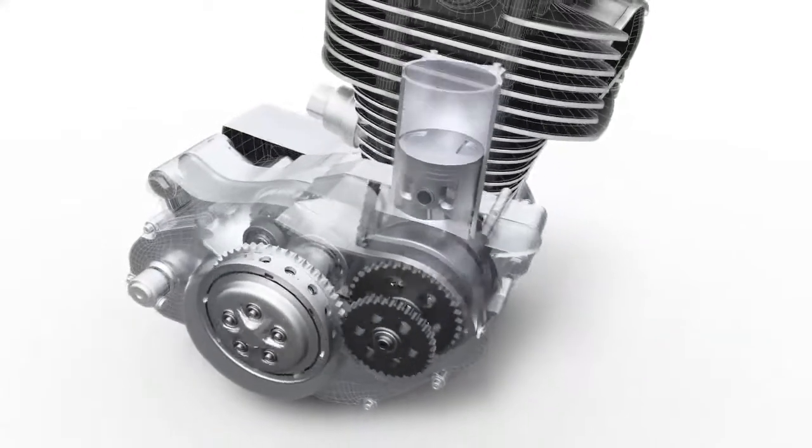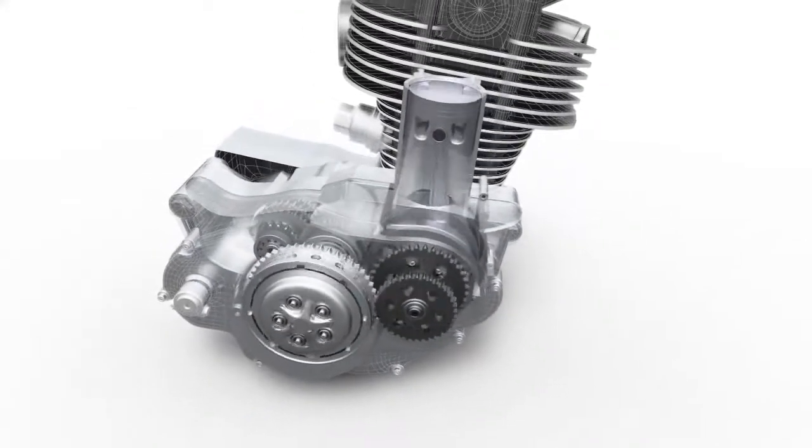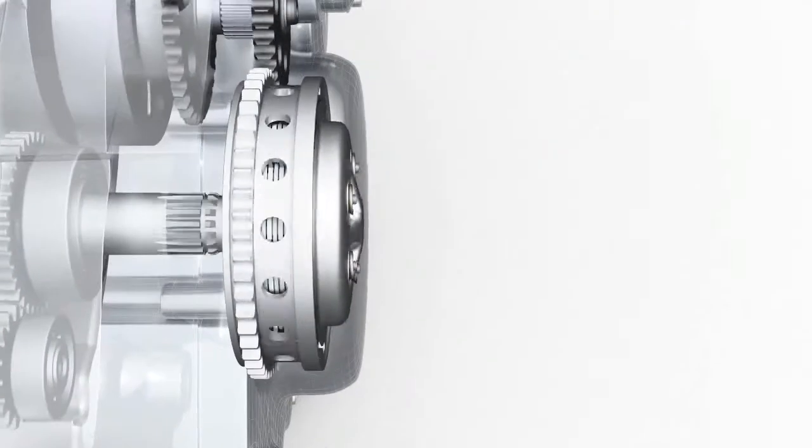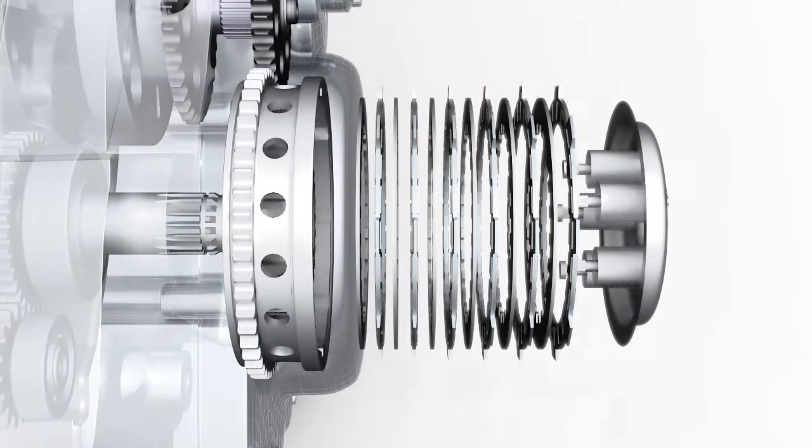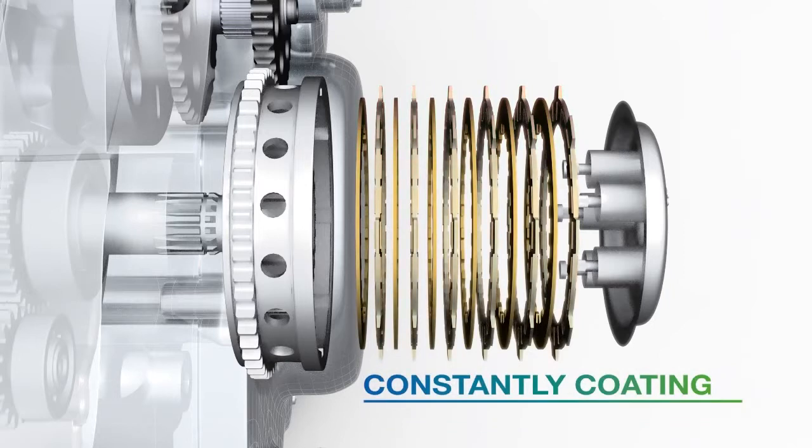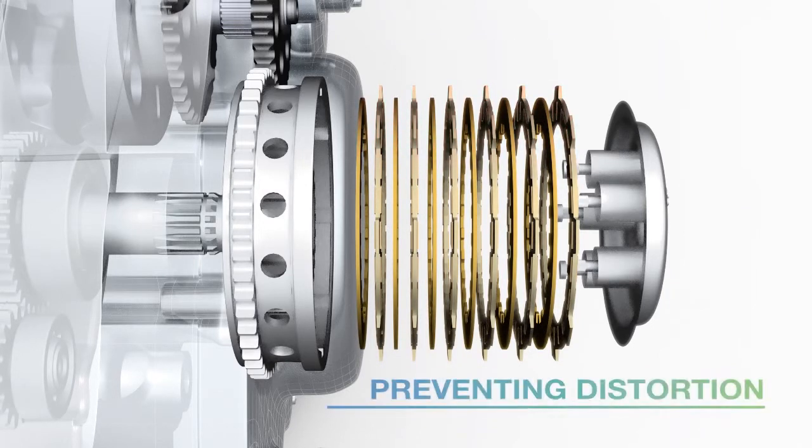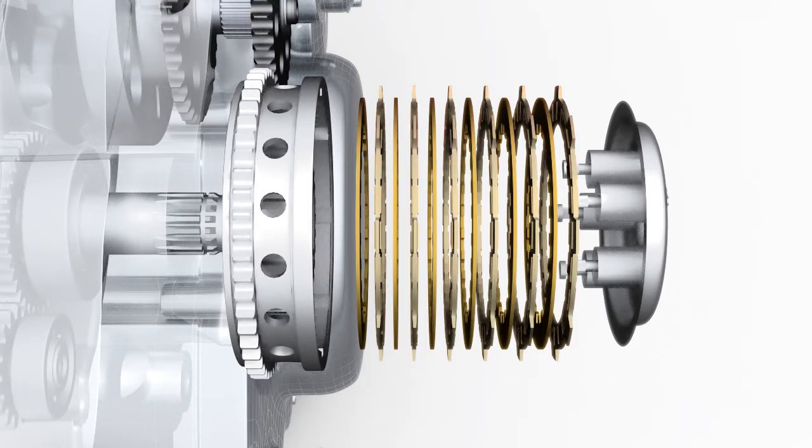When the clutch lever is pulled, the springs are compressed, allowing the clutch plates to separate and disengage the drive through the gearbox to the back wheel. While separated, the plates are being coated with oil to dissipate the heat and cool the plates to prevent distortion, while also coating the plates with fresh additive.